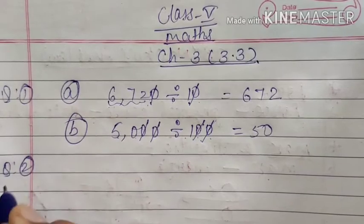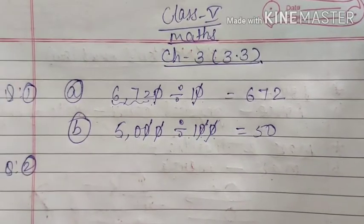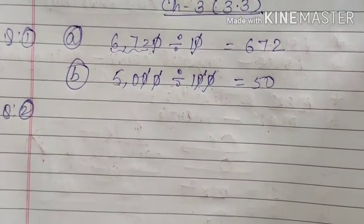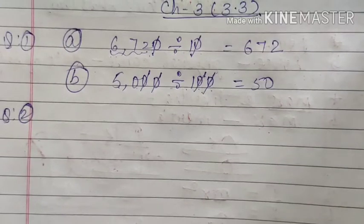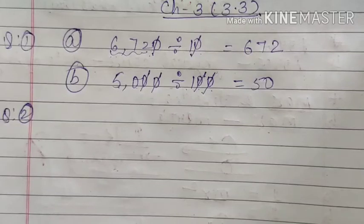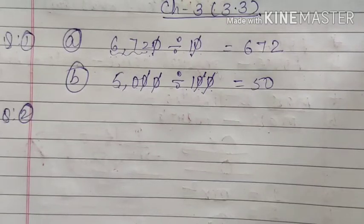Then we will start question number 2. In question number 2, some divisions are given and we have to check the answer. First we will divide the number and then we will check the answer. For that we have already learnt one formula. One more thing: here the divisor is given up to a very large number, that means up to three digits. And we have learnt tables only up to 15.